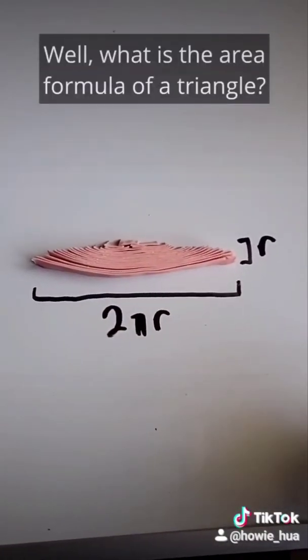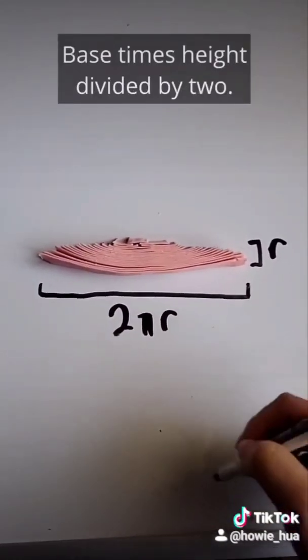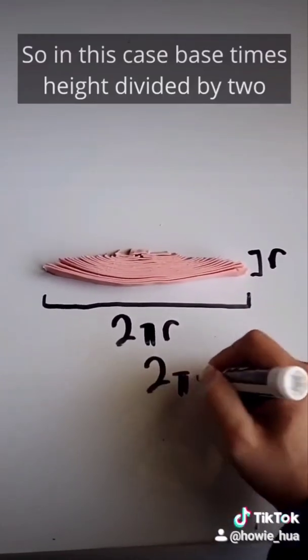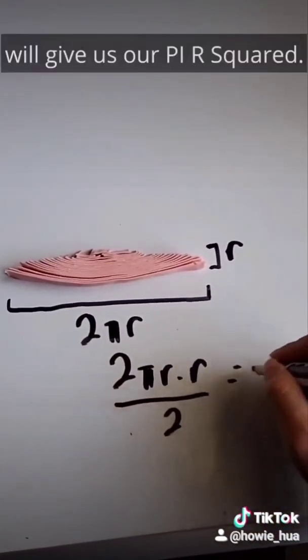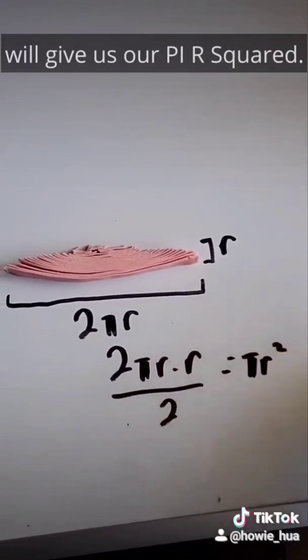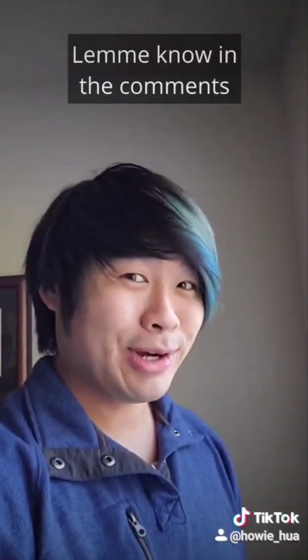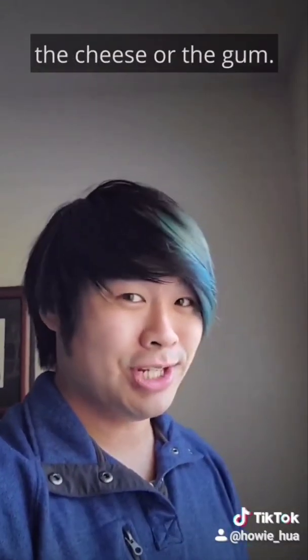Well, what is the area formula of a triangle? Base times height divided by 2. So in this case, base times height divided by 2 will give us our pi r squared. Let me know in the comments which proof you liked better, the cheese or the gum.